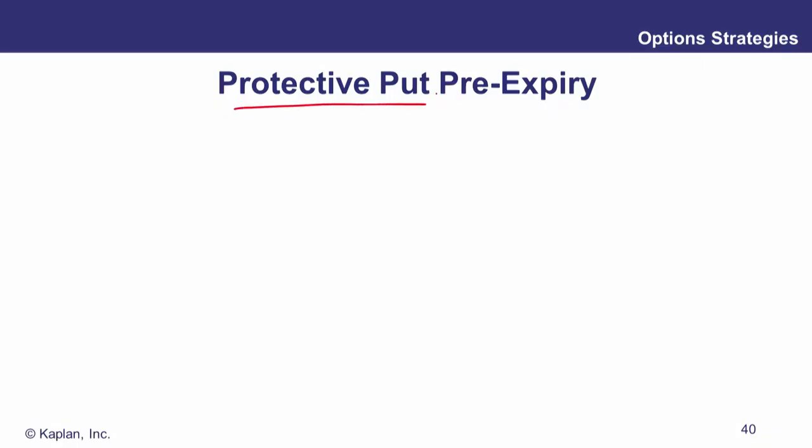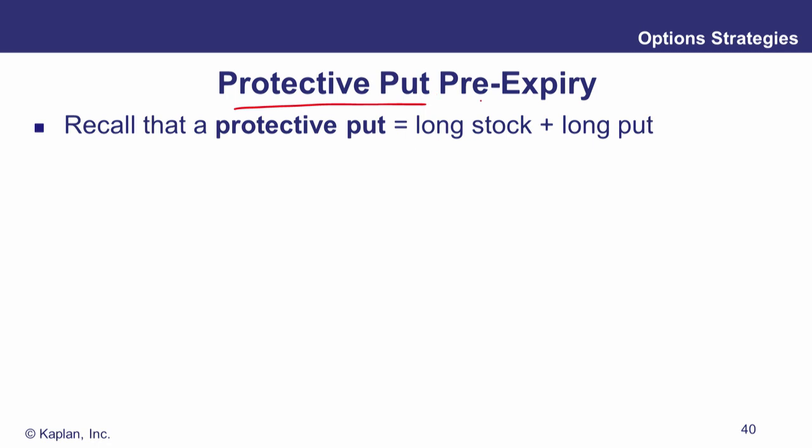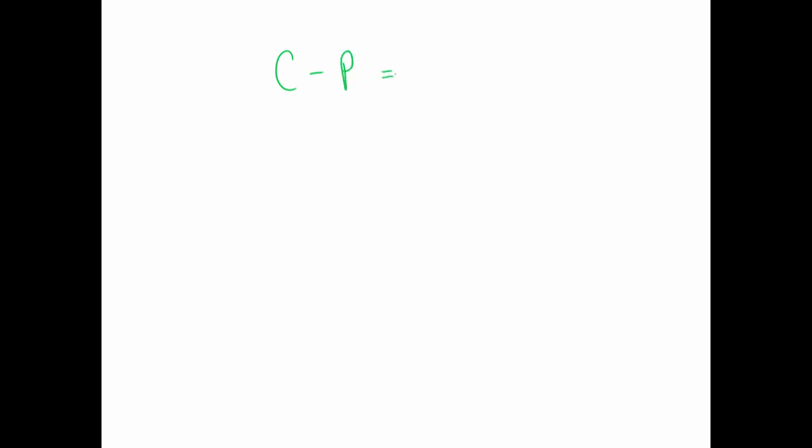Now let's consider strategies from previous modules with regards to deltas. A protective put is long the underlying — S plus P. Put call parity says C minus P is a synthetic long, a geared position in the underlying.